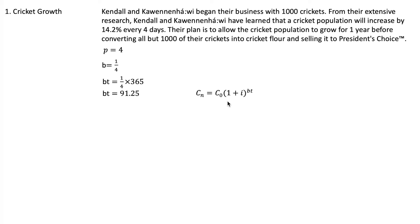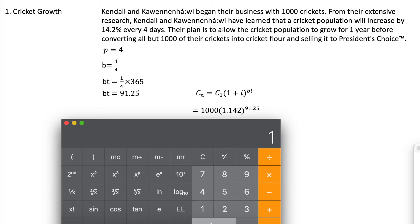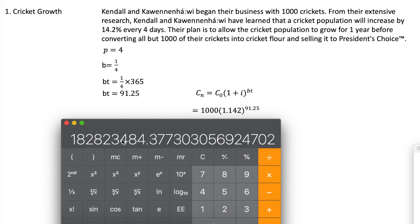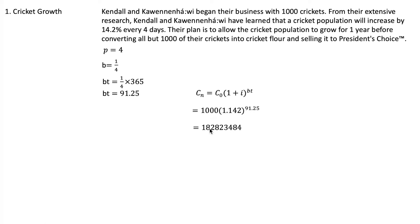We come to our growth formula and fill in everything we know: starting with 1,000 crickets, one added to our growth rate of 14.2 percent gives 1.142, to the power of bt which is 91.25. Calculator time: 1,000 times 1.142 to the power of 91.25 gives us 182,823,484.377 crickets. But you can't have 0.37 of a cricket — you either have a cricket or you don't — so we round down to 182,823,484 crickets.